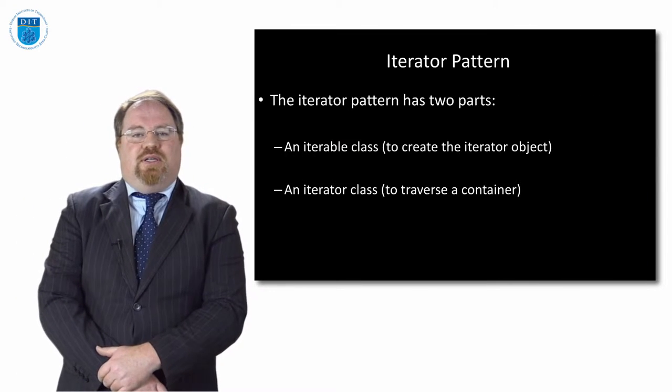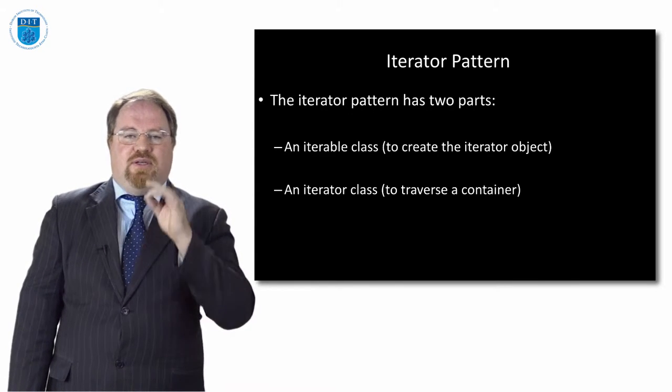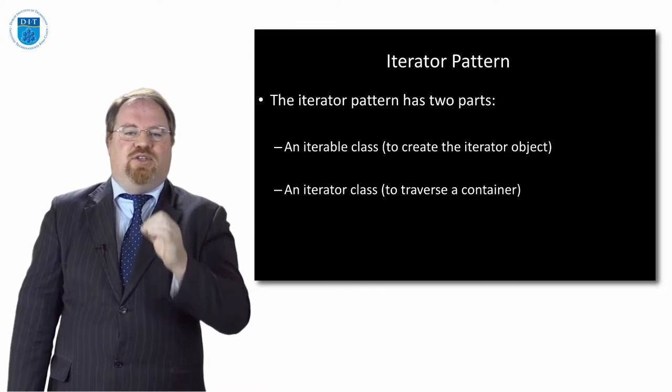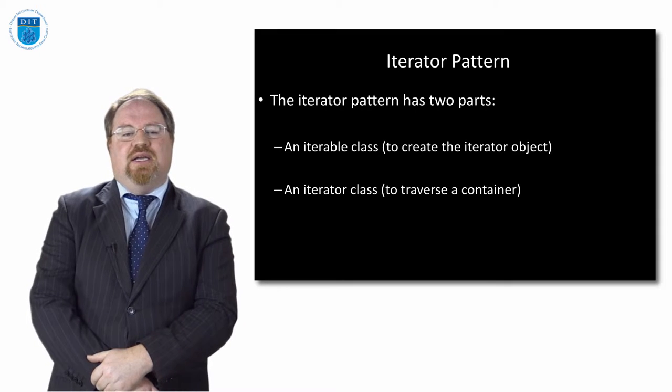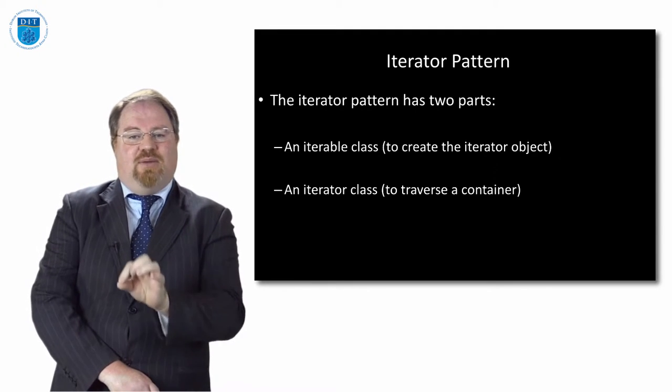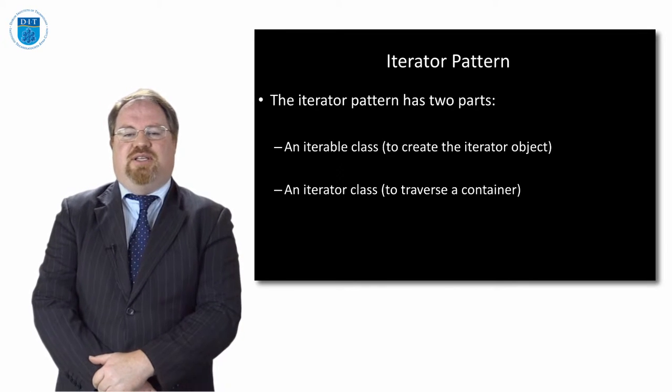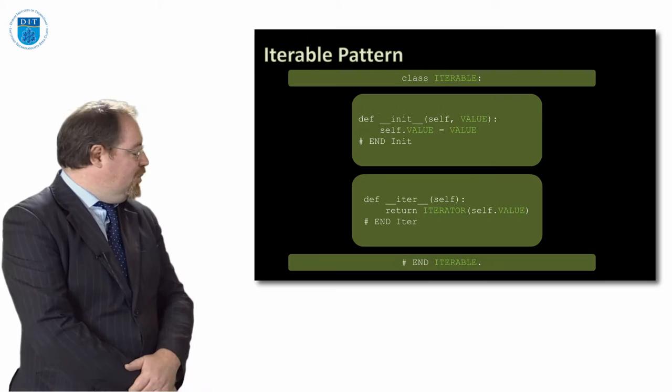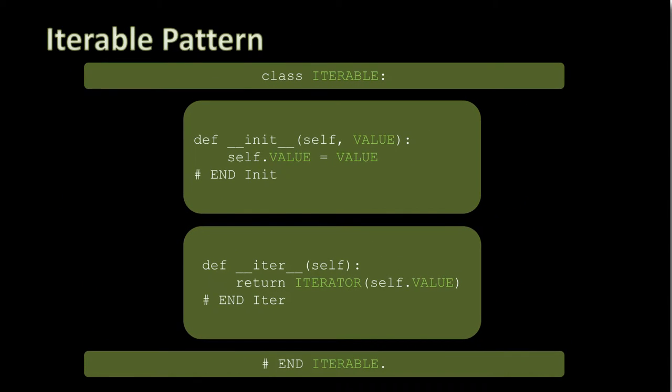So the iterator pattern itself, the pattern, the template, the recipe that we use for each iteration has two parts. It's the iterable part to make the object iterable, and then the iterator part which does the actual iteration. Here's the iterable pattern. The iterable pattern at the top is a class called iterable. It has two methods inside it.